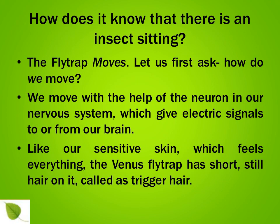How does the Venus flytrap know that there is an insect sitting on one of its lobes? How do we humans move? We move with the help of neurons in our nervous system, which give electric signals to or from our brain — like our sensitive skin which feels everything. The Venus flytrap has short, stiff hair on it called trigger hair.